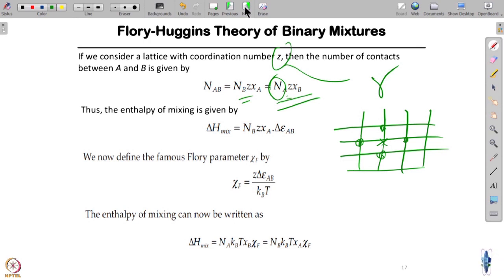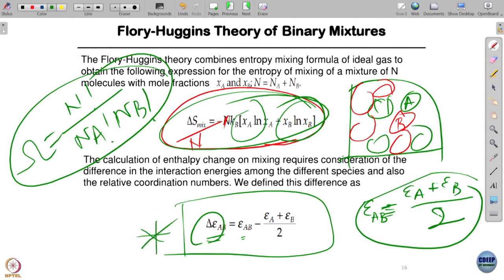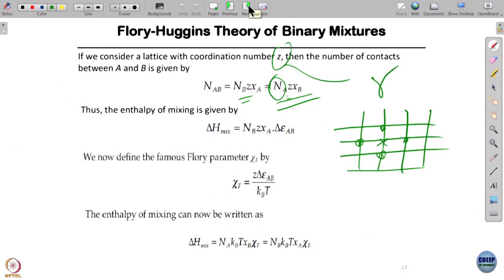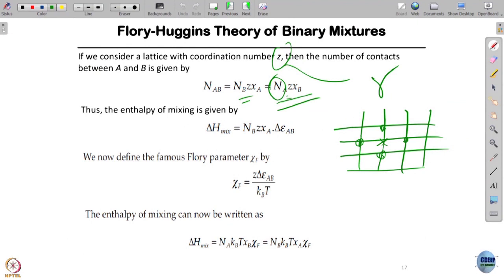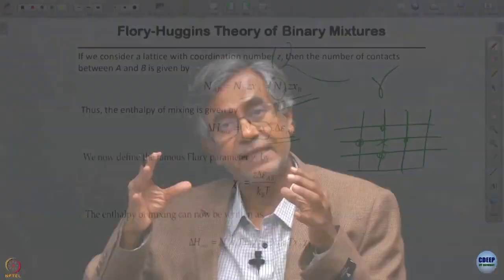I have the entropy, and I'm doing all these things in order to do the enthalpy. Once I know the contact, I can write in terms of NB Z Xa delta epsilon. This will be the enthalpy because these are the contacts. Each contact brings a discriminant. The enthalpy of mixing, delta H mixing, is the change, a new thing that comes in because of mixing.